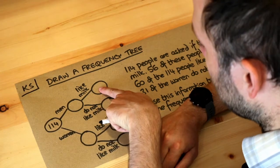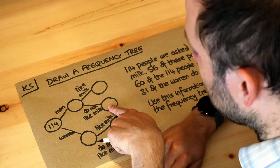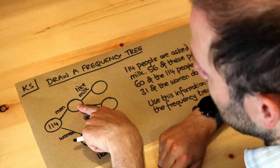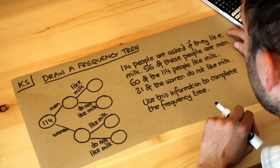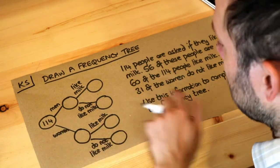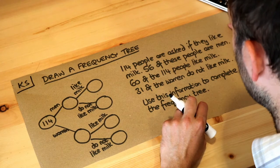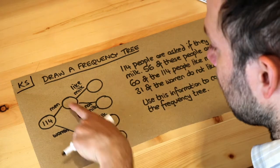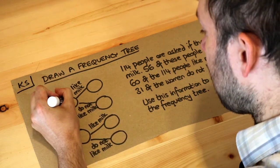Similarly, the men who like milk plus the men who do not like milk adds up to give the total number of men on the left. Now let's use these numbers here. We're already told there's 114 people in total, and we're told that 56 of the people are men, so in the men circle, let's put 56.